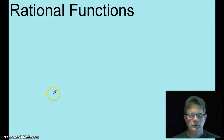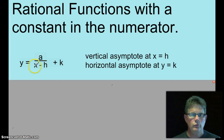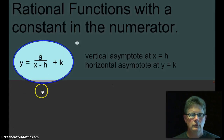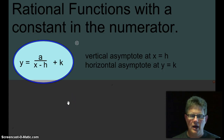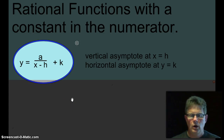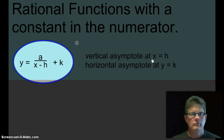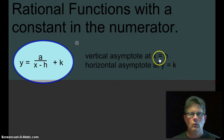The simplest of all rational functions are rational functions that have a constant in the numerator. So that function y is going to be undefined where the denominator is equal to 0. What makes that denominator a 0? When x equals h. And then with a constant in the numerator, the horizontal asymptote is always going to be at y equals k.